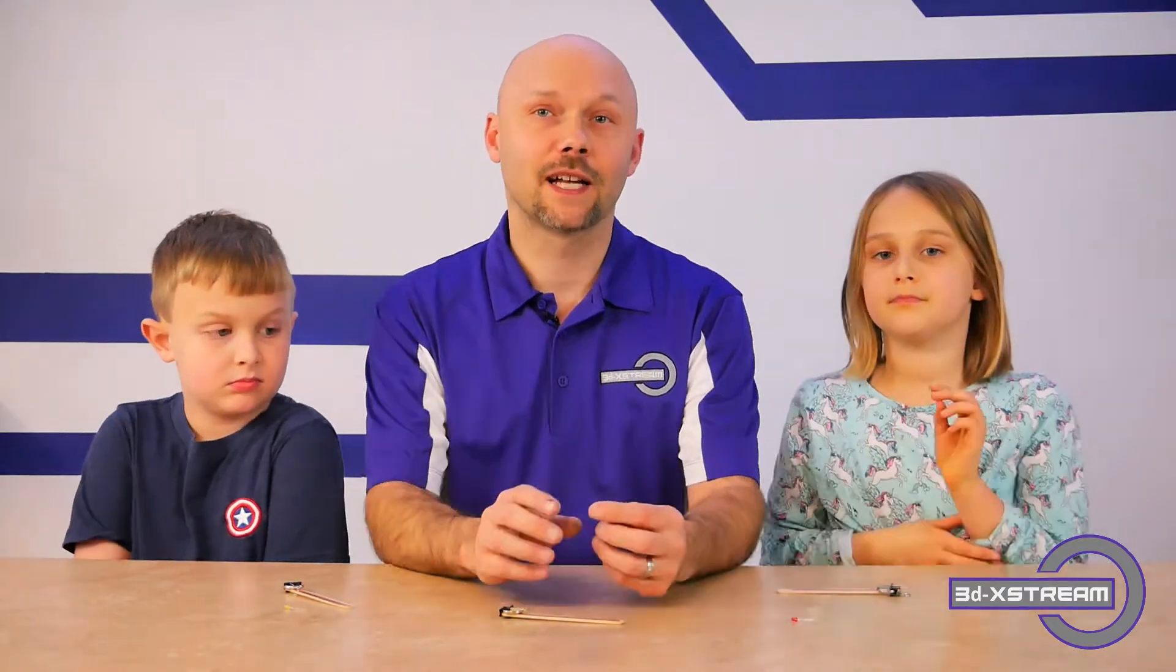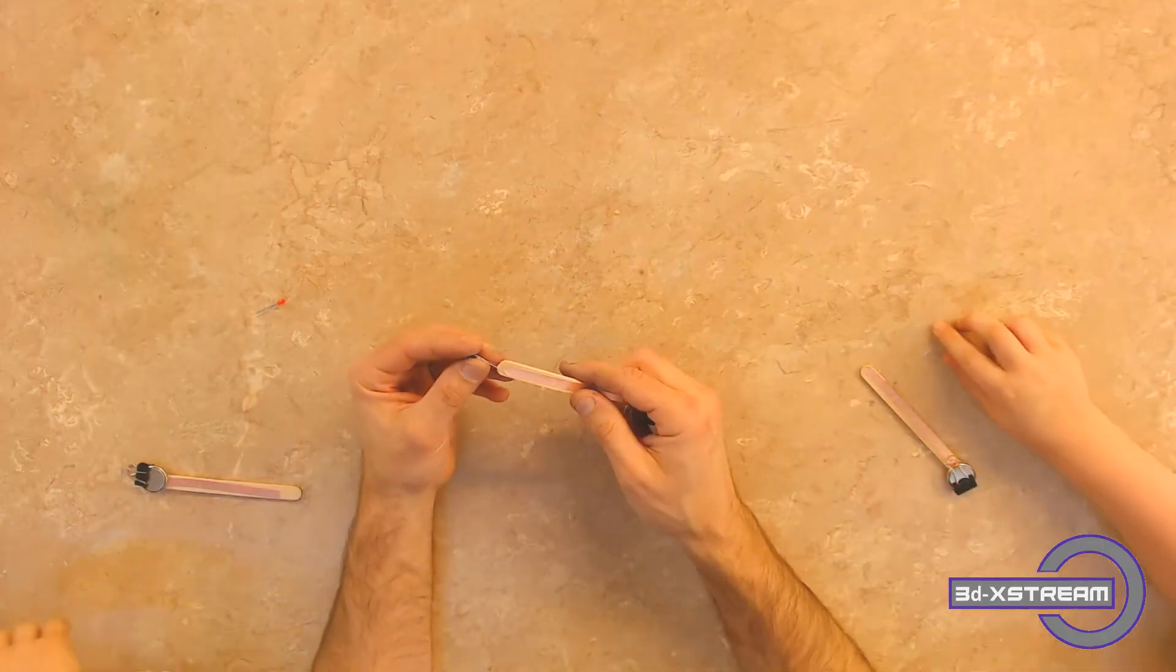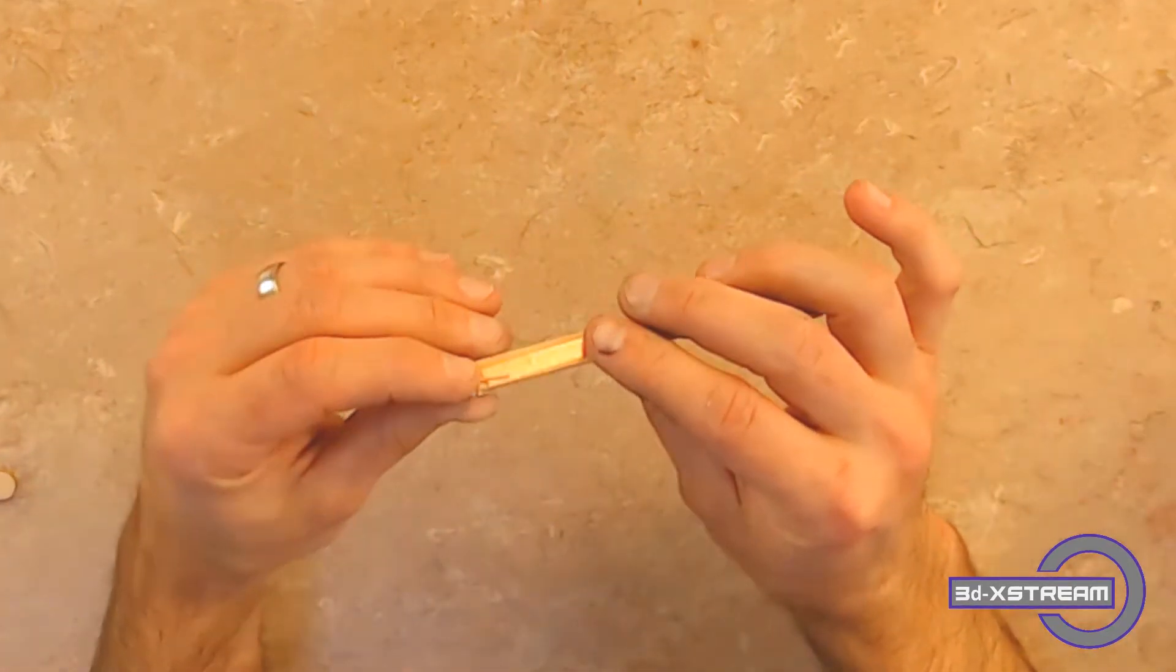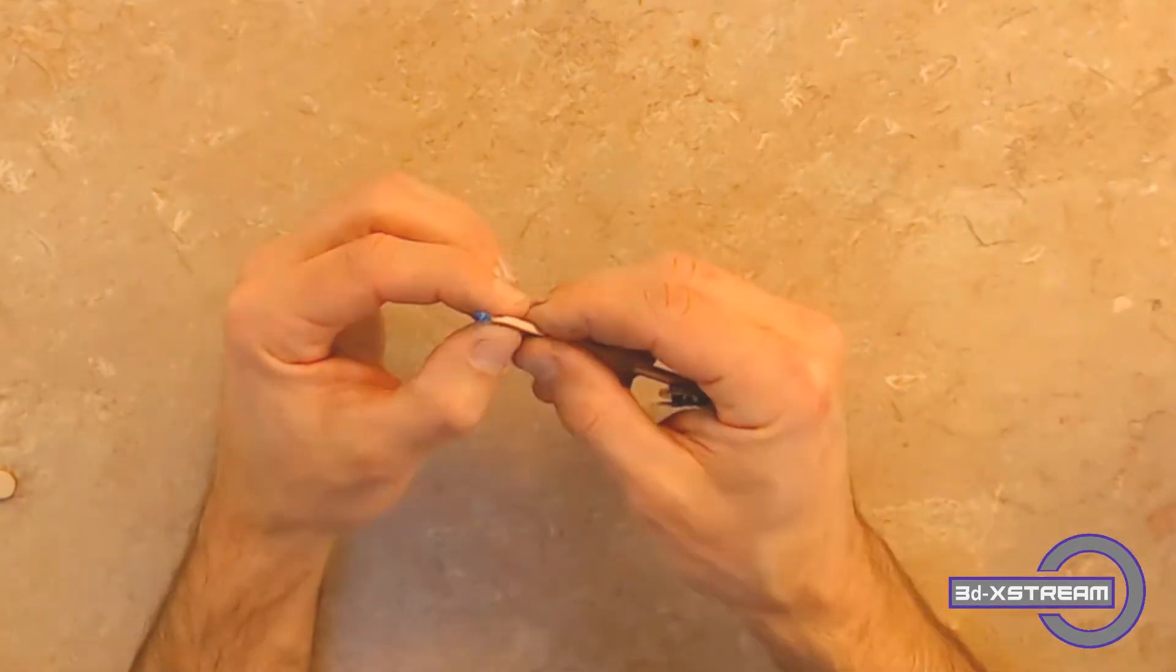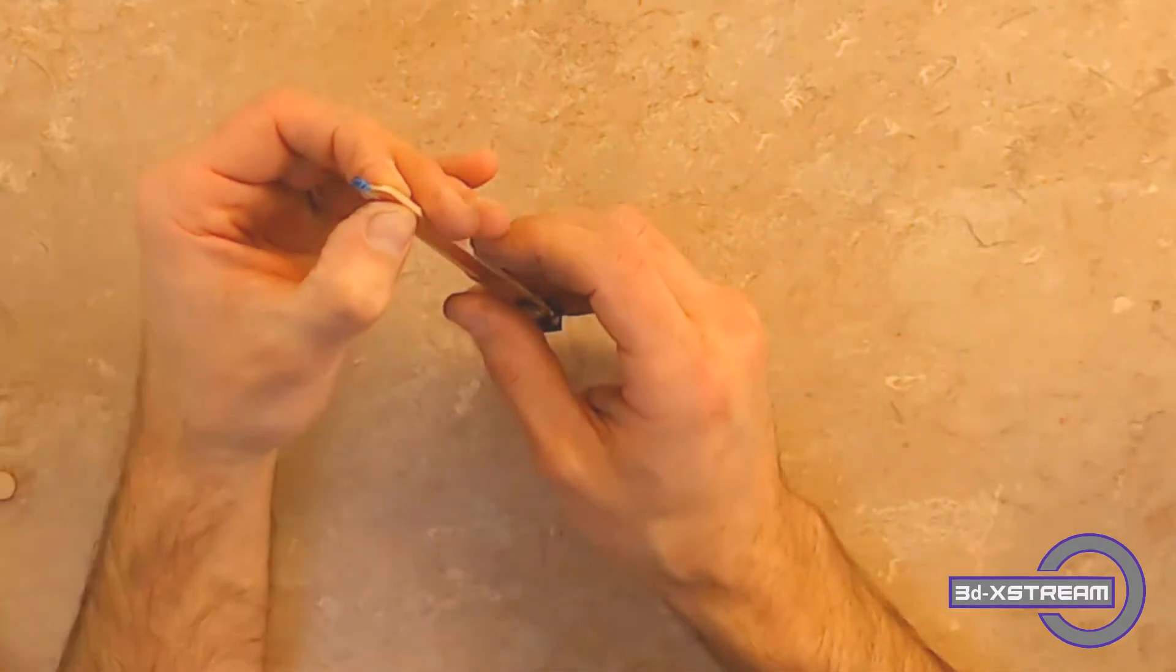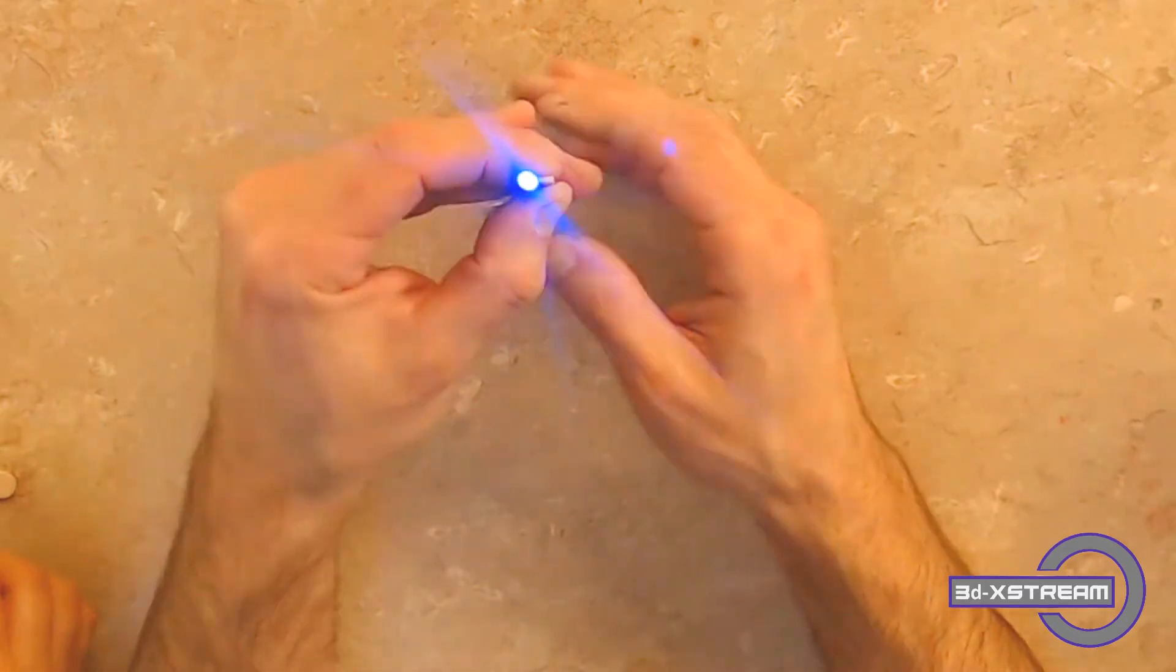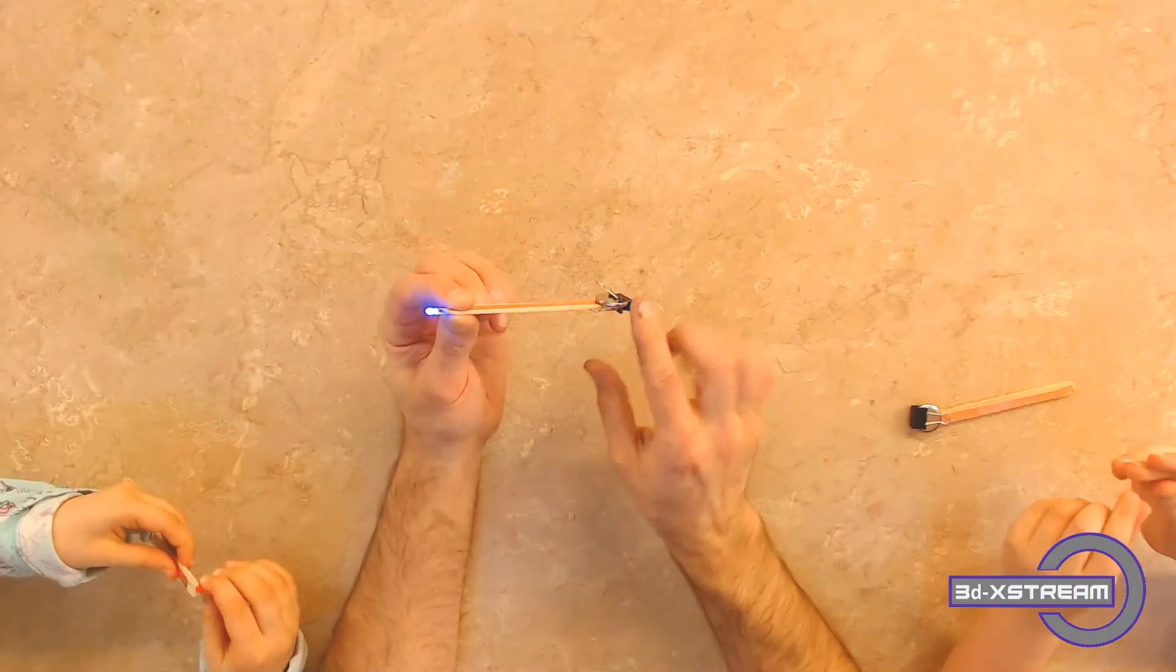Now we just need to light something up, and that's where the LED comes into play. Take your LED and make sure that you put one side on one side of the popsicle stick touching the copper and the opposite on the other end. If it doesn't work, try the other way and it should light up. That's a simple circuit.